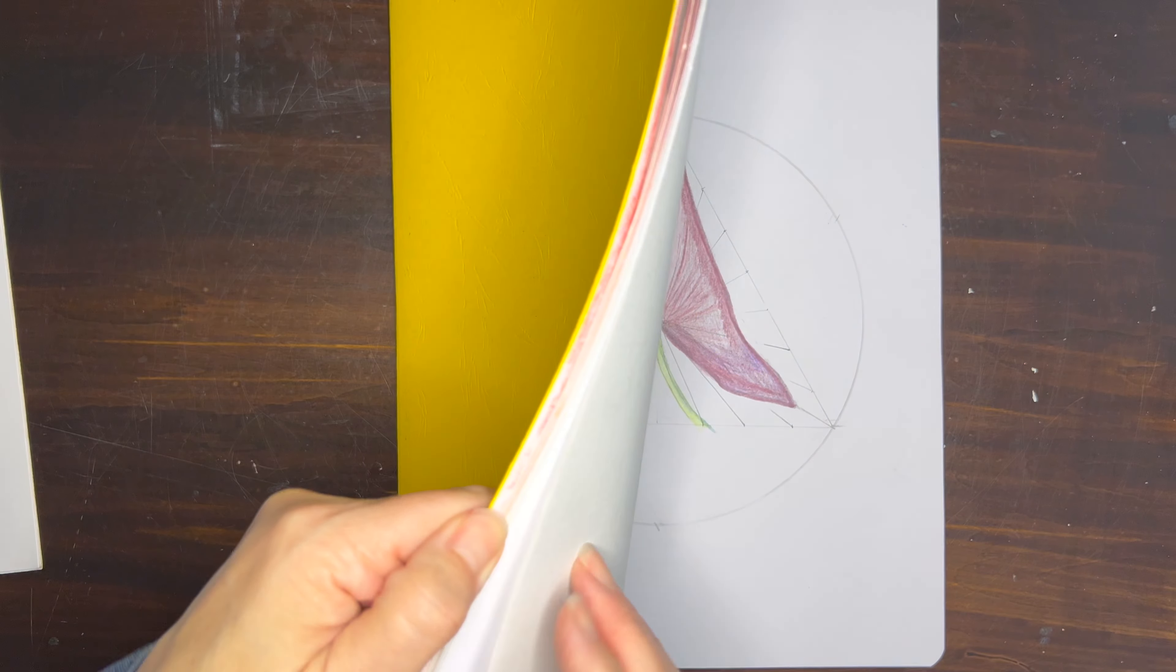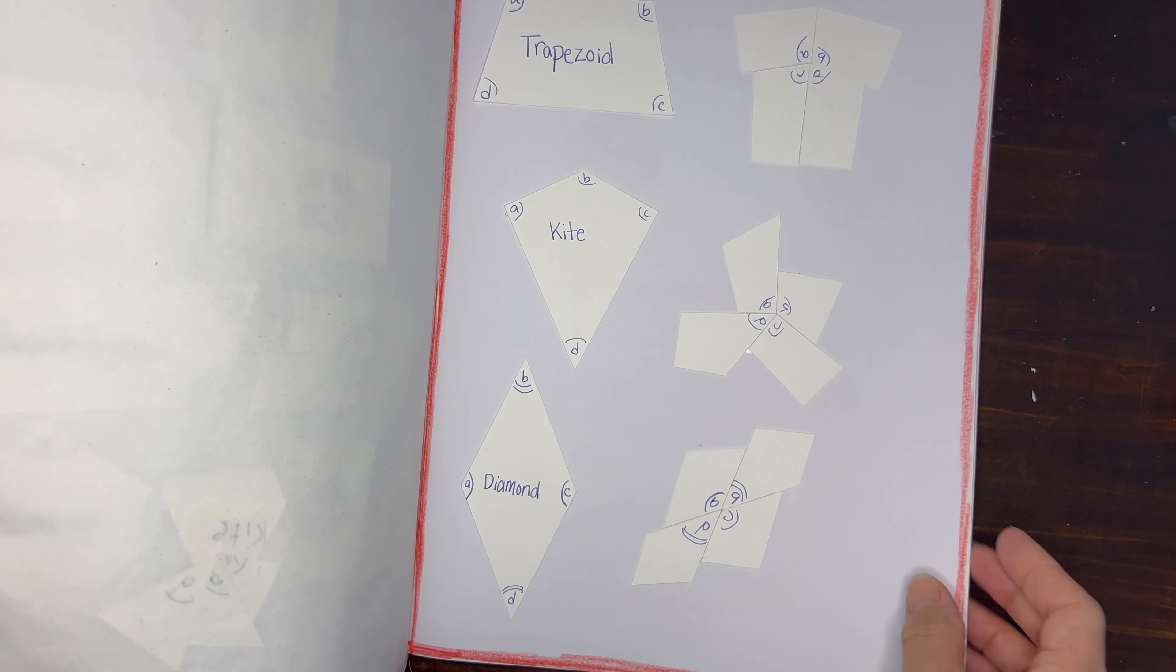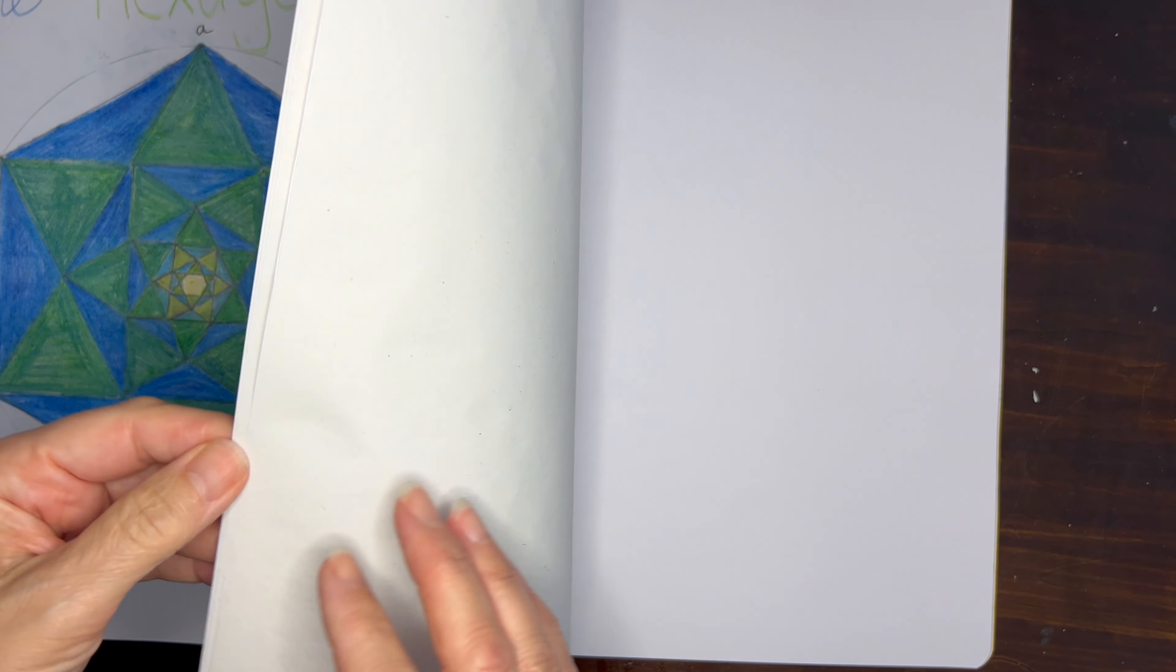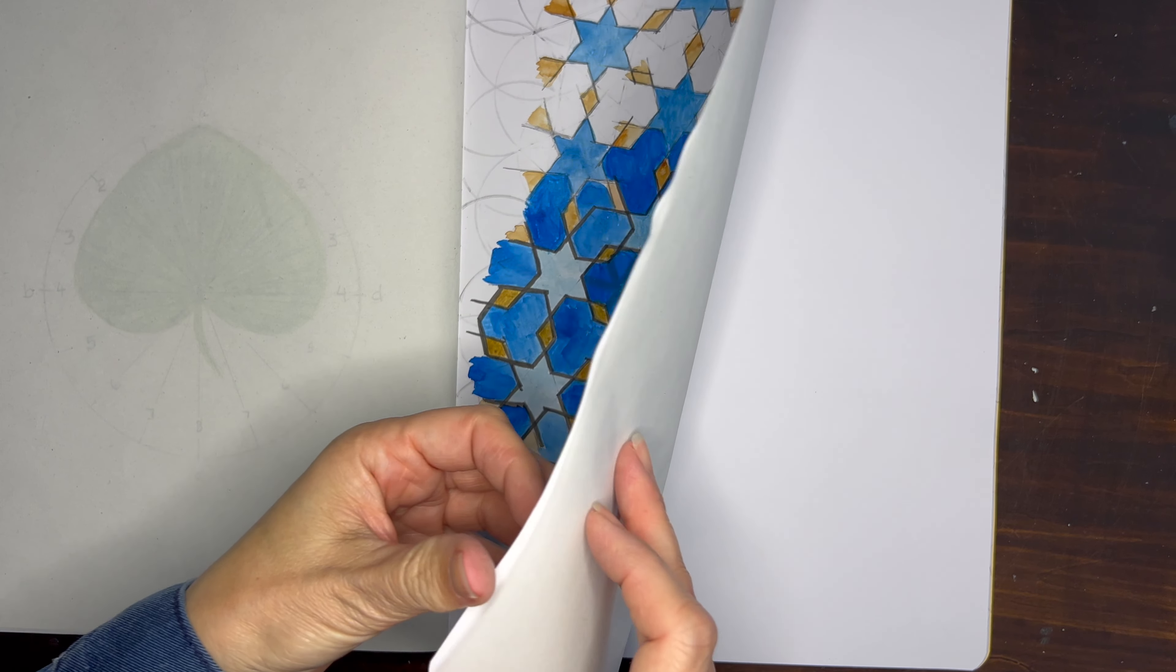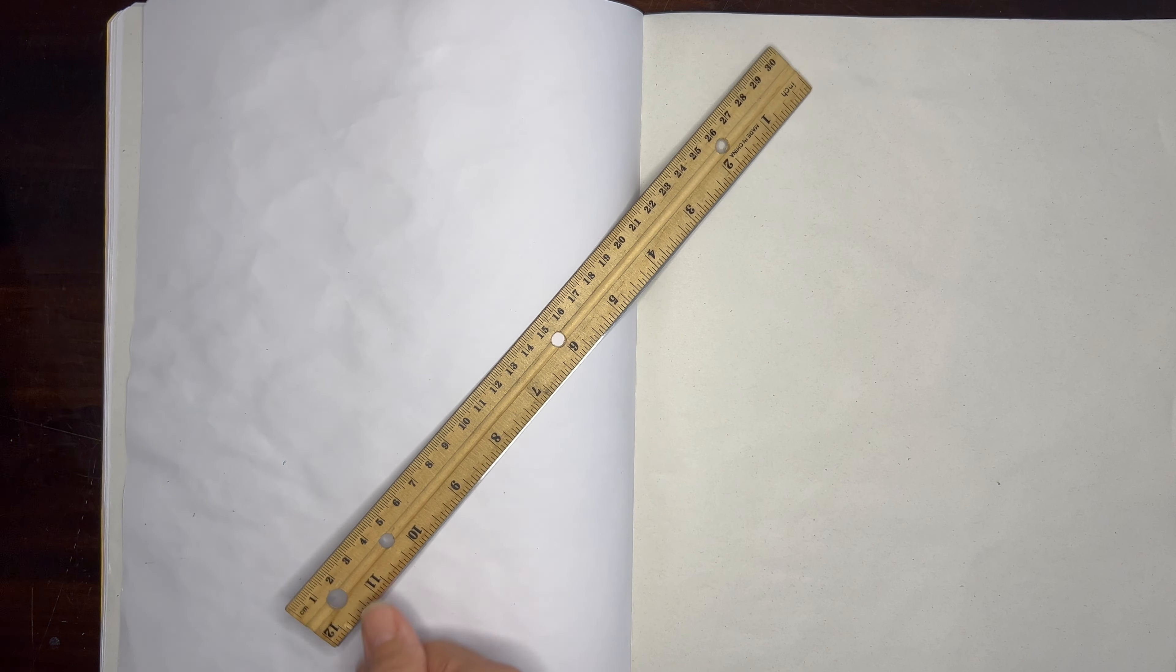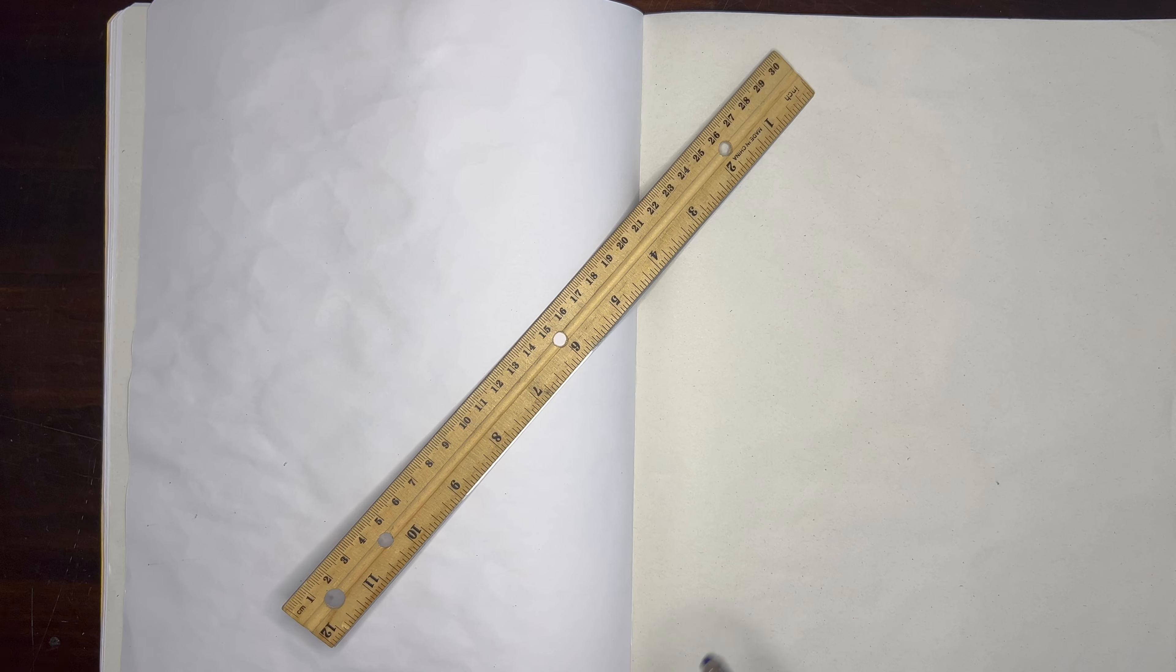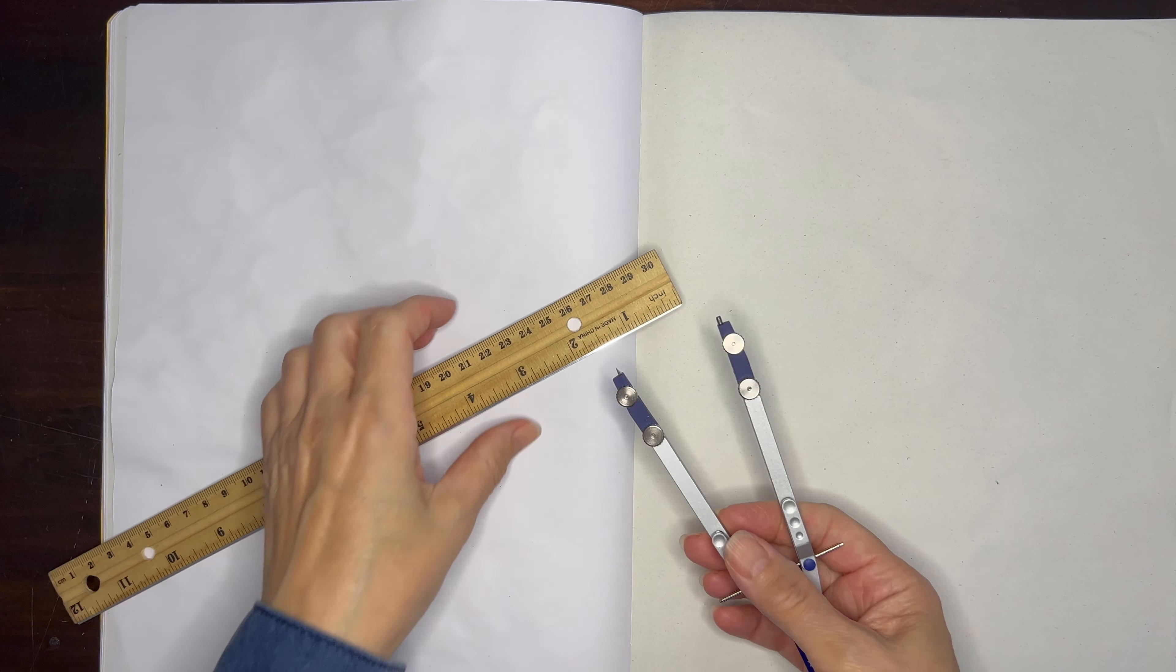For this lesson we're going to be using our main lesson books that measure nine and a half inches by twelve and a half inches, so these are a little bit larger than what you would typically use for middle school. We get these from A Child's Dream and you can find the links to all of the resources on the blog post that accompanies this video and you can find the link to that blog post down in the description box below.